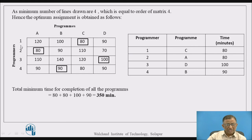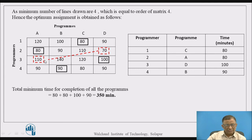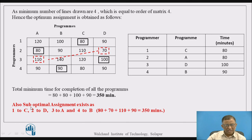The optimal assignment from the first solution is: programmer one to program C, programmer two to program A, programmer three to program D, and programmer four to program B — resulting in a total time of 350 minutes. However, a second solution exists by interchanging two brackets to a diagonal position: programmer one to C, two to D, three to A, and four to B — also resulting in 350 minutes. This suboptimal solution provides flexibility to the manager, as both solutions are equally optimal.